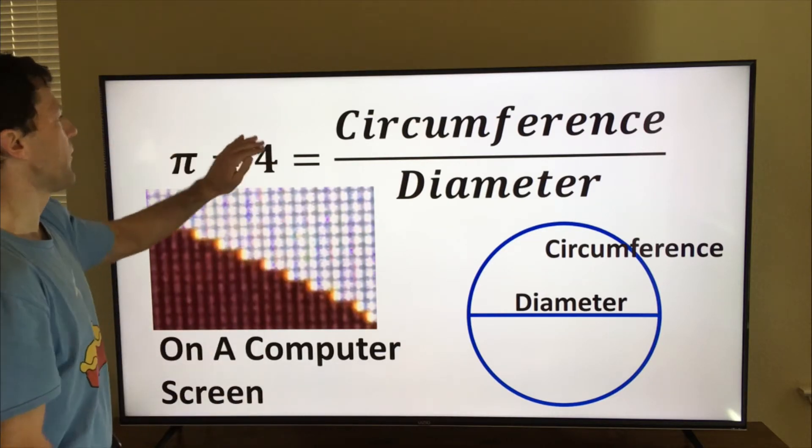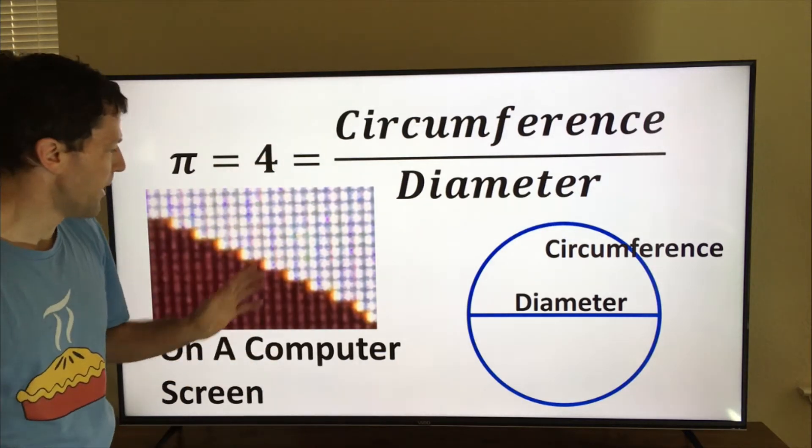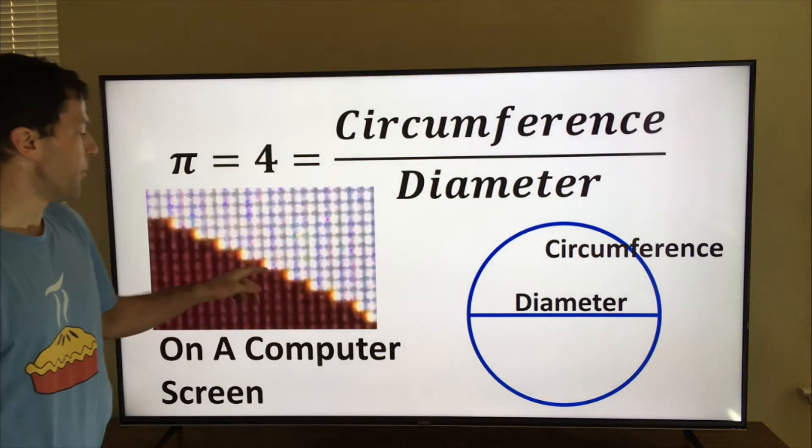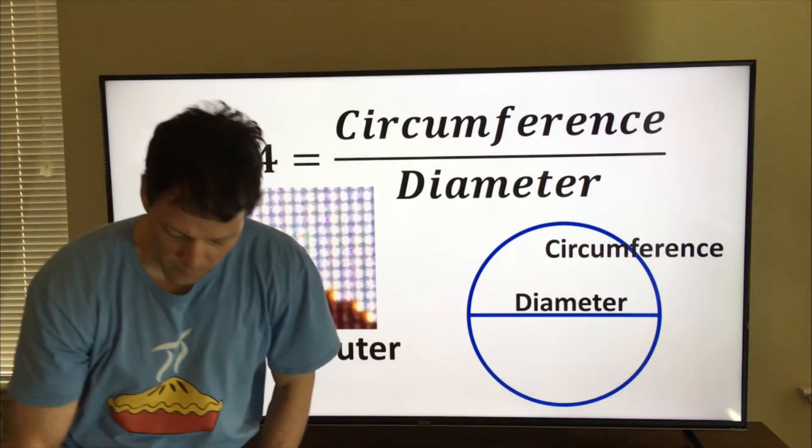And then if you say, well, the definition of pi is the circumference of the diameter, therefore by transitivity, pi is 4. So in here, I'm zooming in on the pixels. I'm showing you that the perimeter of that red figure is 4.